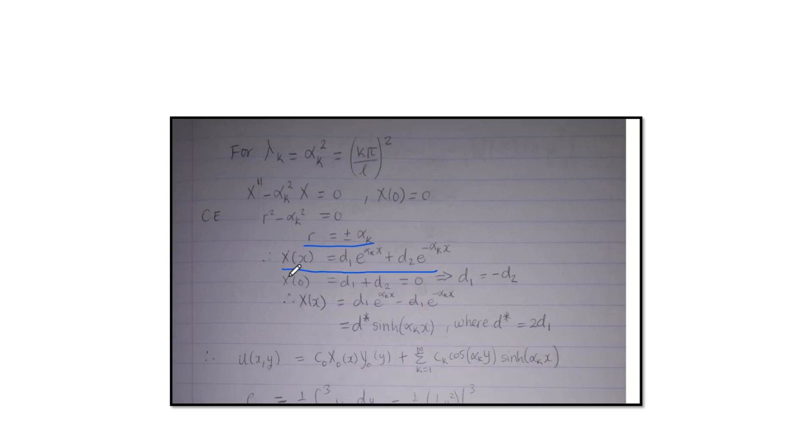And then we use our boundary conditions. So we get D1 equals minus D2. So now where there is D2, we put minus D1, which is something like that. And then here, you're gonna use hyperbolic functions. So you should know the definition of sine hyperbolic of x. So that's just what we use there. So our D star now becomes two D1.